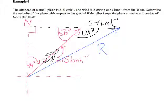Knowing both this side, this side, and this angle, we can use the cosine rule to work out the magnitude of the resultant velocity. Once we've determined that, we can use the sine rule to work out the size of this angle here, and therefore work out the direction that the resultant vector is going.